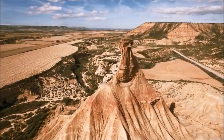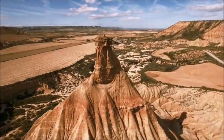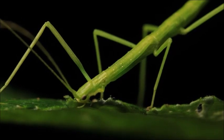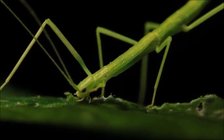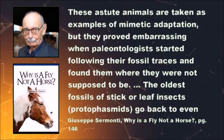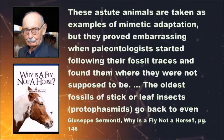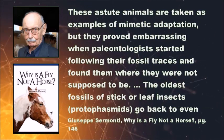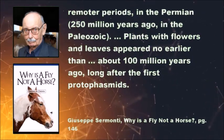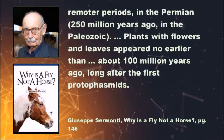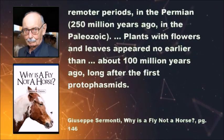Additional problems plague evolution from the fossil record. For example, leaf insects appear over 100 million years before leaves in the fossil record. Evolution would have predicted that leaf insects evolved to look like leaves for camouflage — however, this is clearly not what happened. As Giuseppe Cermonti says: 'These animals are taken as examples of mimetic adaptation, but they proved embarrassing when paleontologists found them where they were not supposed to be. The oldest fossils of stick or leaf insects, protophasmids, go back to the Permian, 250 million years ago. Plants with flowers and leaves appear no earlier than about 100 million years ago, long after the first protophasmids.'